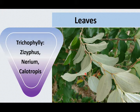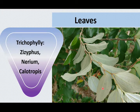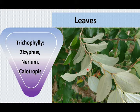In some xerophytes, especially those growing well-exposed to strong wind, the undersurface of the leaves is covered with thick hairs which protect the stomatal guard cells and check the rate of transpiration. Xerophytes with hairy covering on leaves and stems are known as trichophyllous plants, and the condition is known as trichophylly. Trichophylly is commonly seen in Ziziphus, Nerium, and Calotropis.